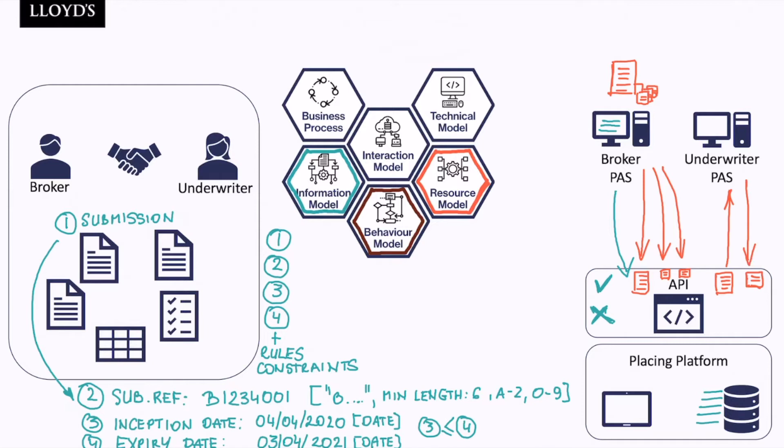And the broker and underwriter systems will use different methods like post, put to either create or update, or get to retrieve the records. All this will form part of the resource model.